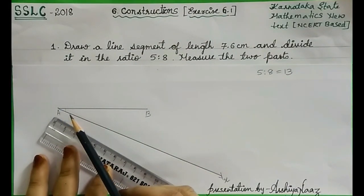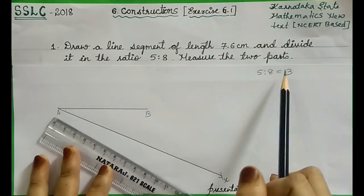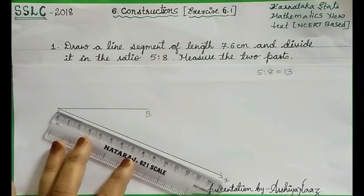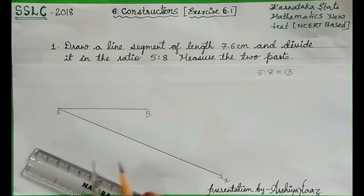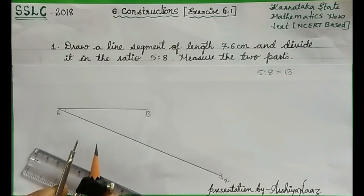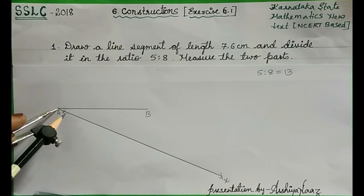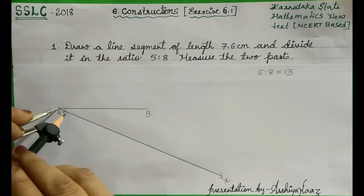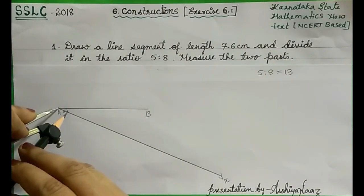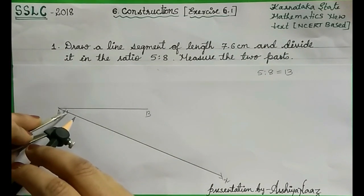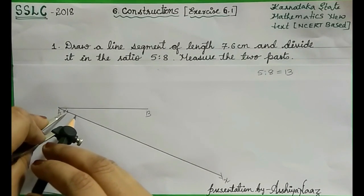Now locate equidistant points from point A which are 13 in number with the help of compass. Adjust it to any radius. Starting from point A, mark the points which are equidistant from each other.